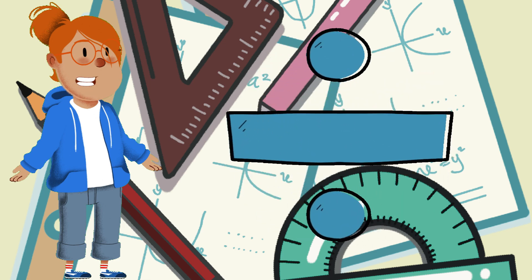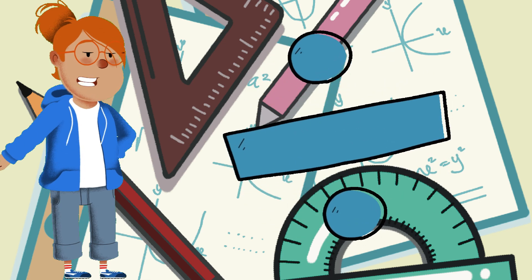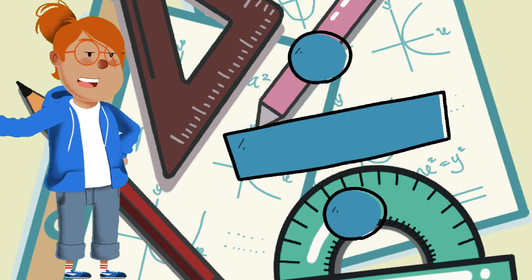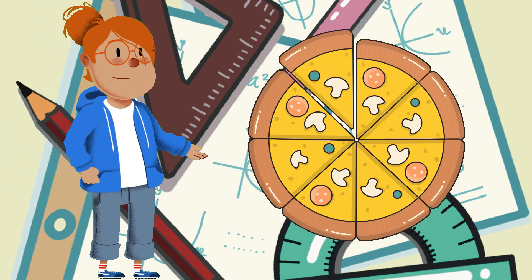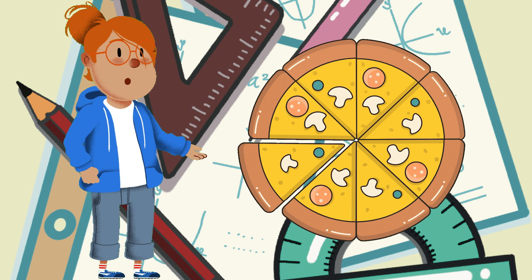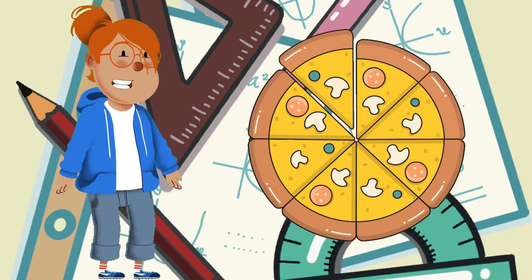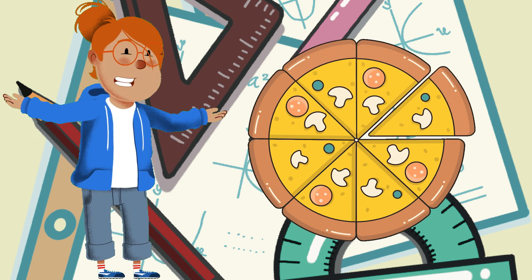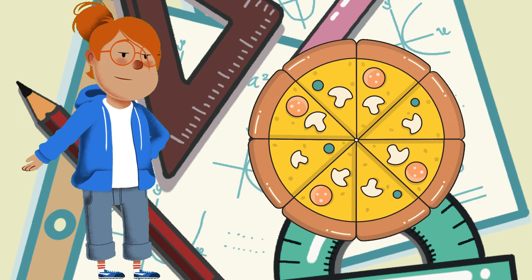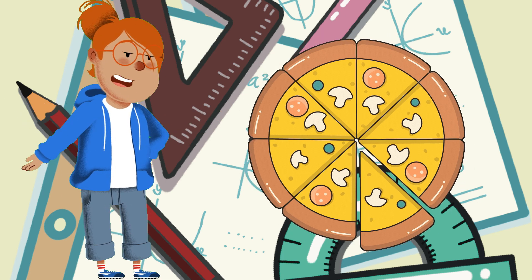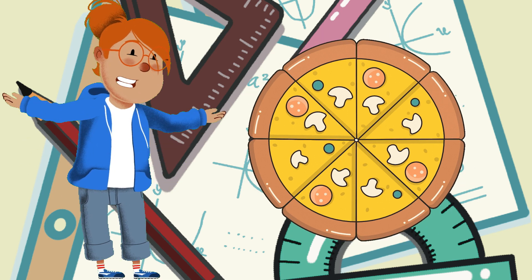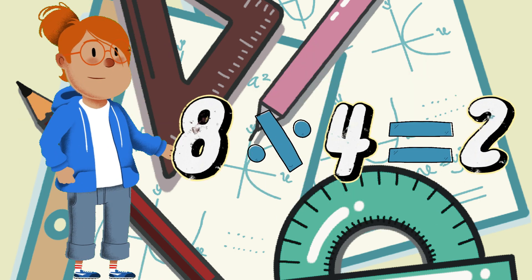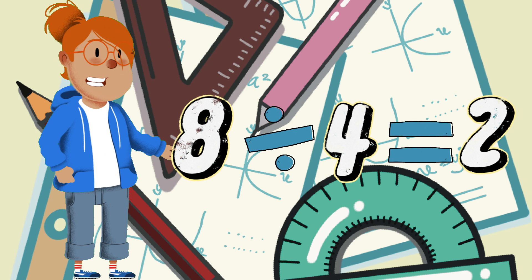Finally, let's talk about division. Division is when we split something into equal parts. It's great for sharing things evenly. Imagine you have eight slices of pizza and you want to share them equally with four friends. How many slices does each friend get? Let's divide: eight slices divided by four friends equals two slices per friend. Wonderful! Division helps us share things equally.